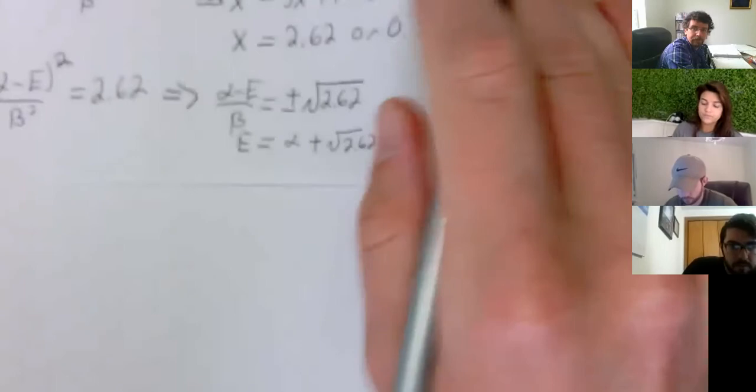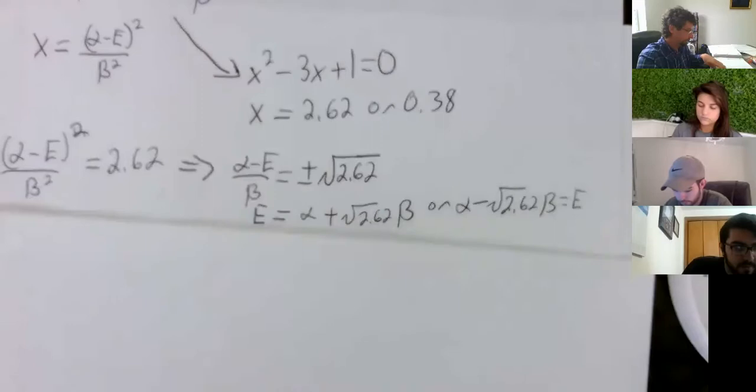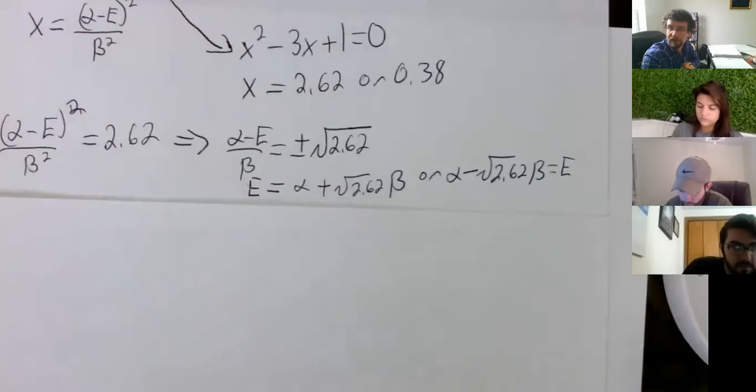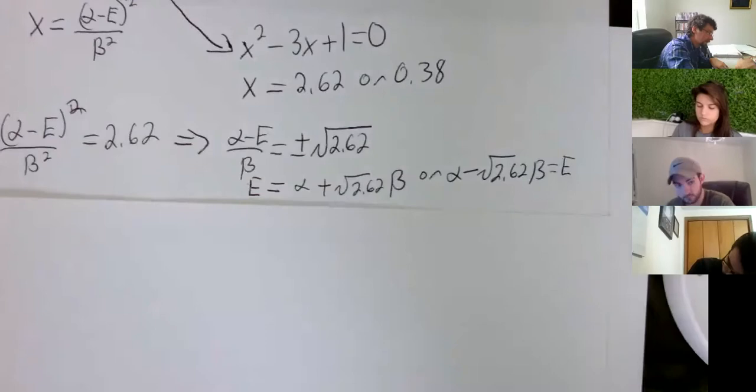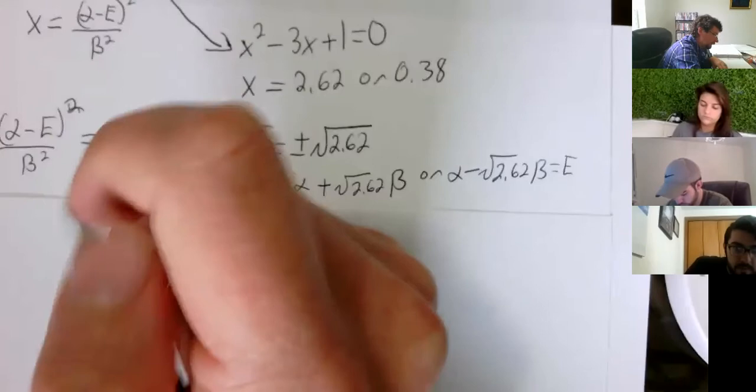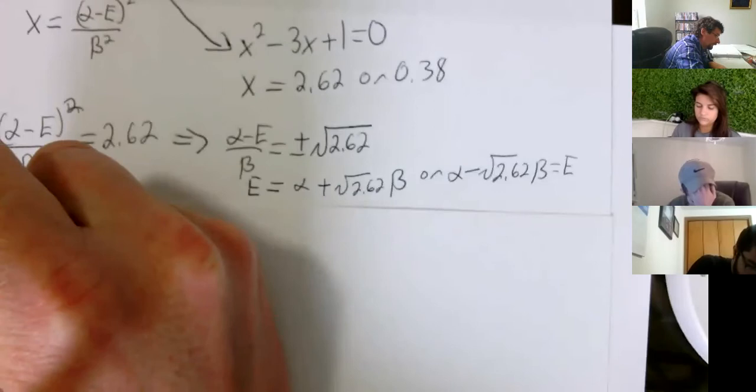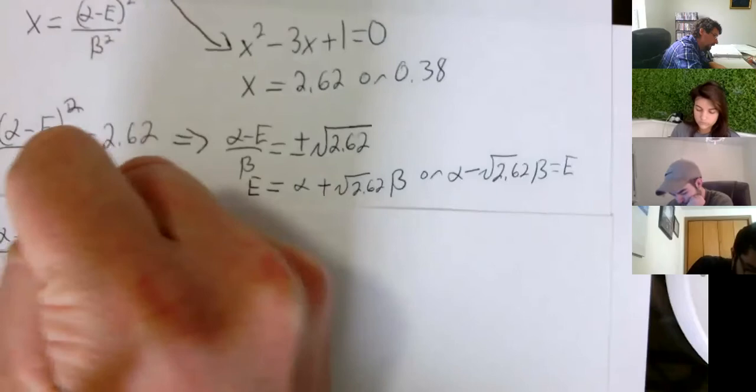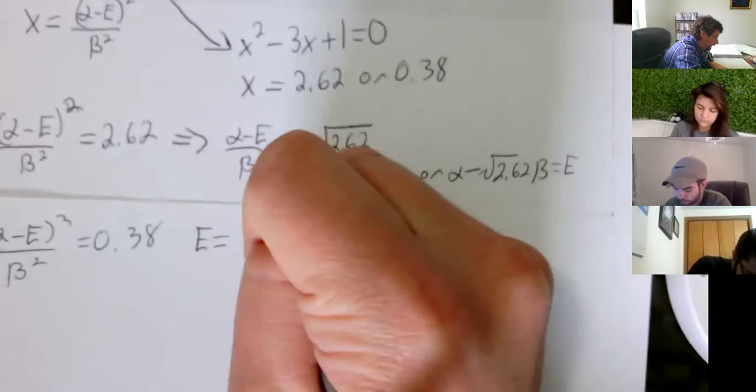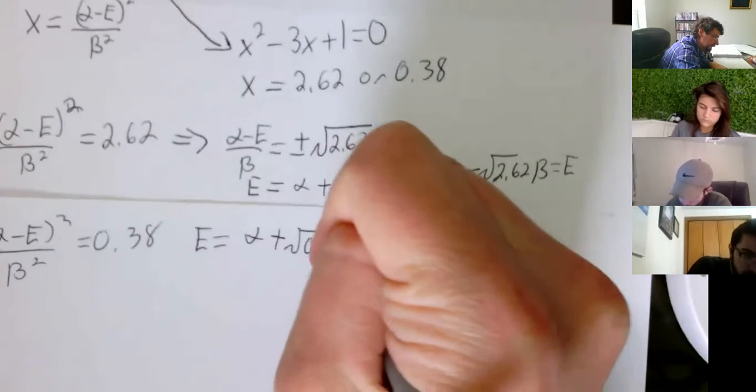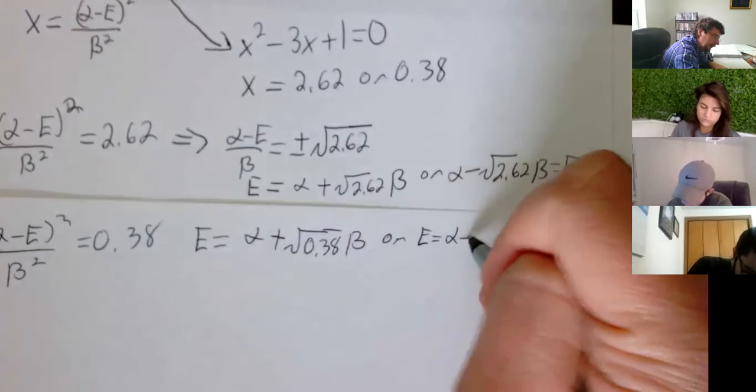So then we manipulate that through. In this case, E becomes alpha plus square root 2.62 beta or alpha minus square root 2.62 beta. So we get a few terms there. Or two roots, excuse me. And if we were to use the other X value, then we would get the same thing, just a different radical value? Yeah. Well, it'll actually work out to be the same. Oh, you mean the 0.38? Yeah. 0.38. Yeah. So you do the same thing for the other one. (alpha minus E)^2 over beta^2 is equal to 0.38. Alpha plus square root of 0.38 beta. Or E is equal to alpha minus square root of 0.38 beta.